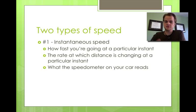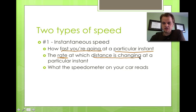There are some details to this. First of all, there are two types of speed. The first one is what we call instantaneous speed. Obviously it's speed, so it's how fast you're going, but it's at a particular instant—right there, right then. That's what instantaneous speed is. In other words, in more physics terms, it's the rate at which your distance is changing at a particular instant, at that very second. A good example of this is what the speedometer on your car reads. Whatever your speedometer is reading, that's reading your instantaneous speed—your speed at that very second, that very instant.